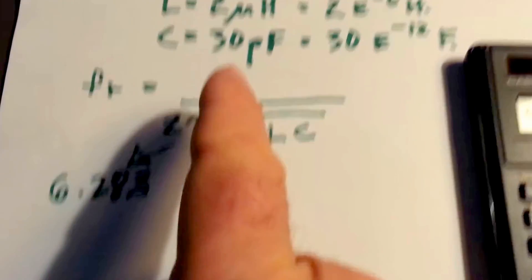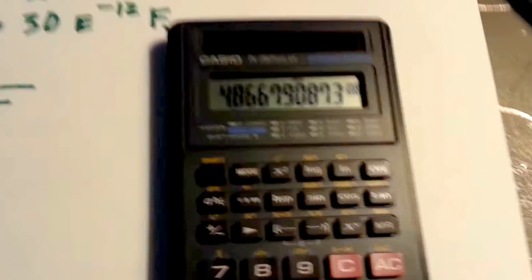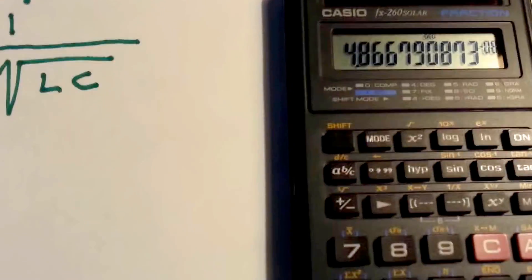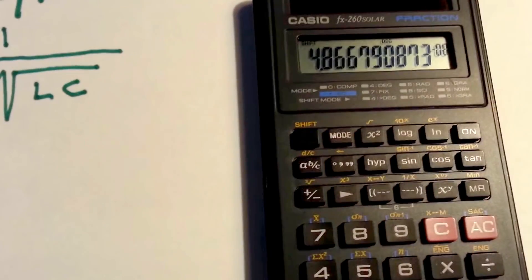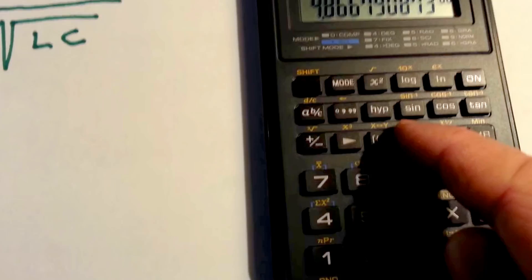And then now we take the reciprocal, or 1 over that. So this reciprocal function, 1 over x, will do that for us. So we press shift, and then 1 over x.